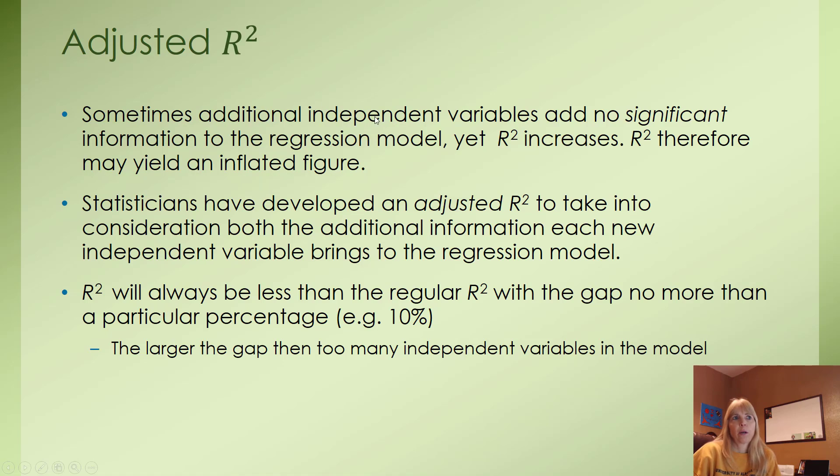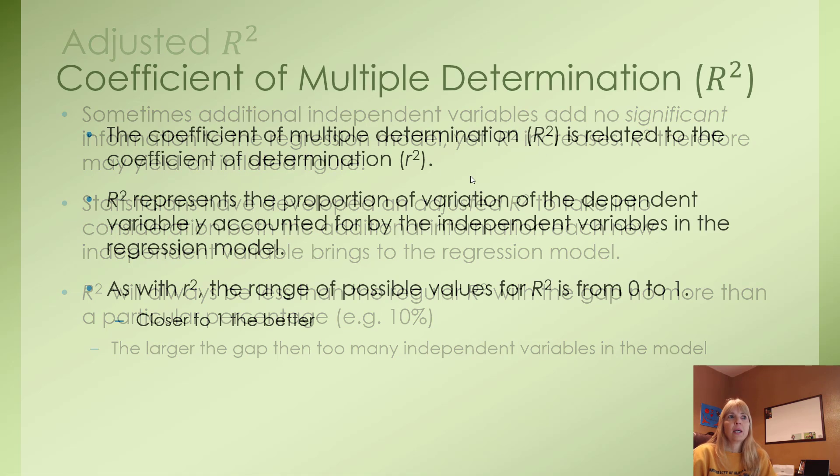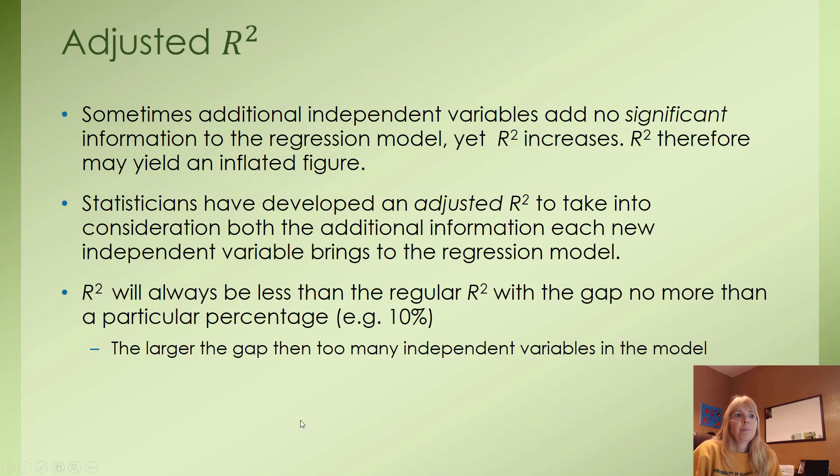The adjusted R² - we like to look at this and compare it with the coefficient of multiple determination. It will always be less than our regular R². But we like the gap between these two values to be no more than a certain percentage, typically about 10%. When that gap starts to get larger, we've probably introduced too many independent variables to our model, and we need to look at residuals to see what's actually going on.